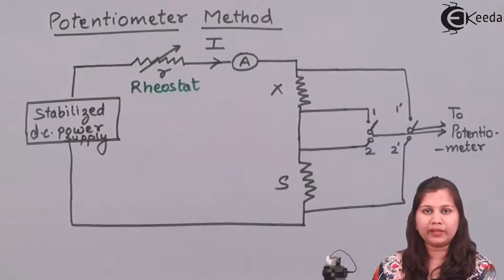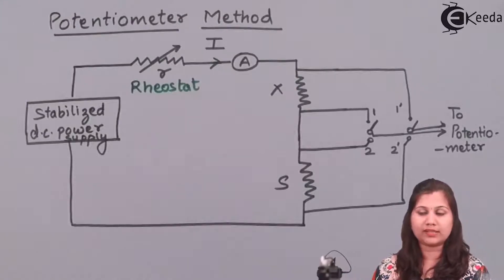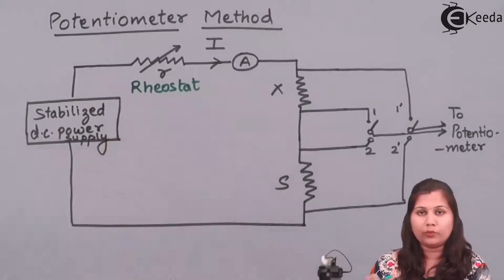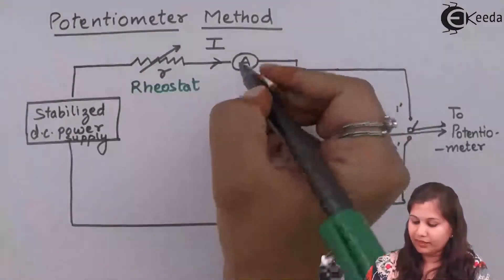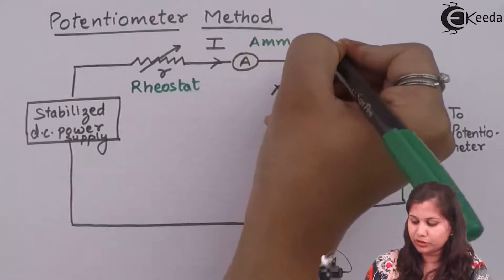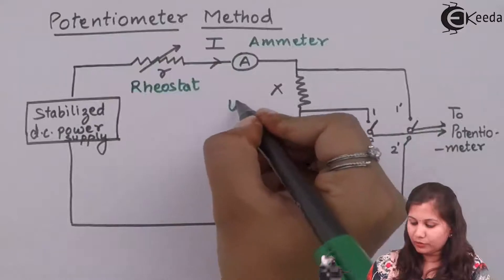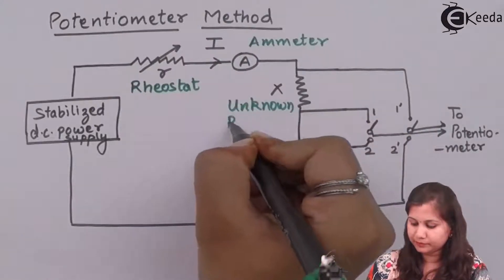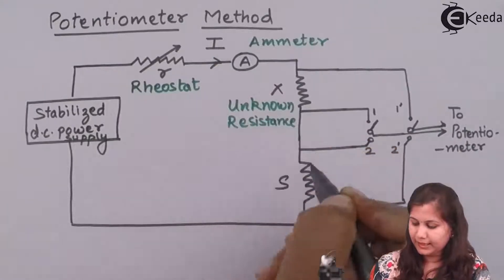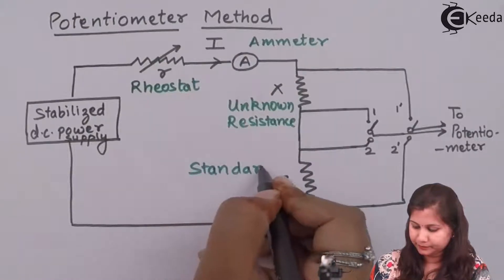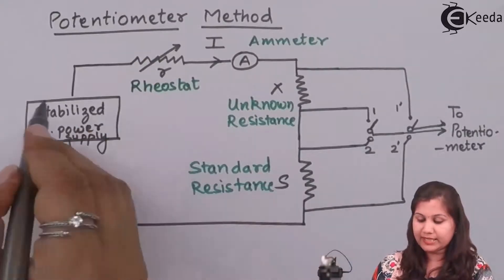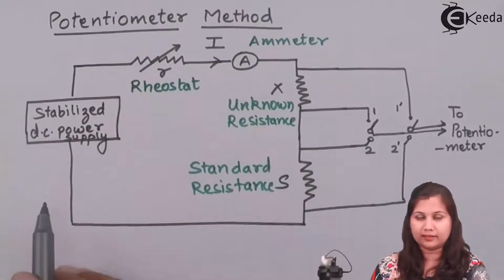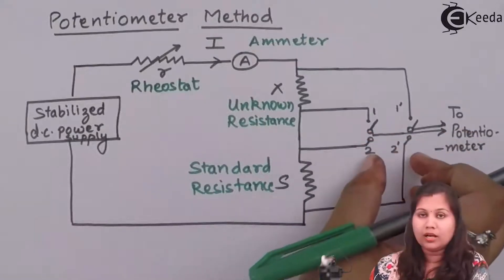A rheostat provides us the variable resistance — it has a cylindrical core across which the resistance wire is wound, and we have a sliding connection over it so we can vary the value of the resistance. Then we have an ammeter which is going to measure the current. Here X is the unknown resistance whose value we want to measure, and S is the standard resistance. Here we have a stabilized DC power supply providing the current.